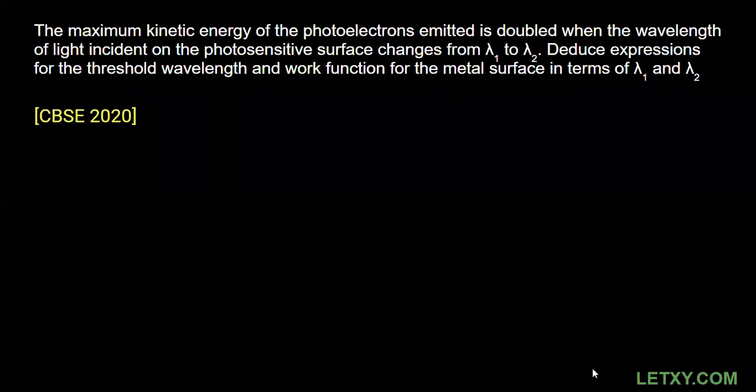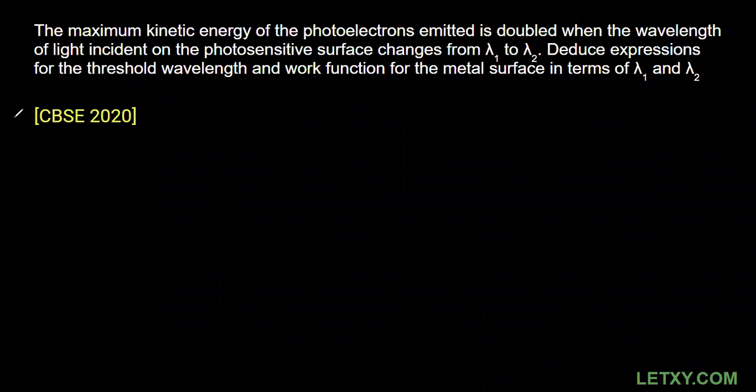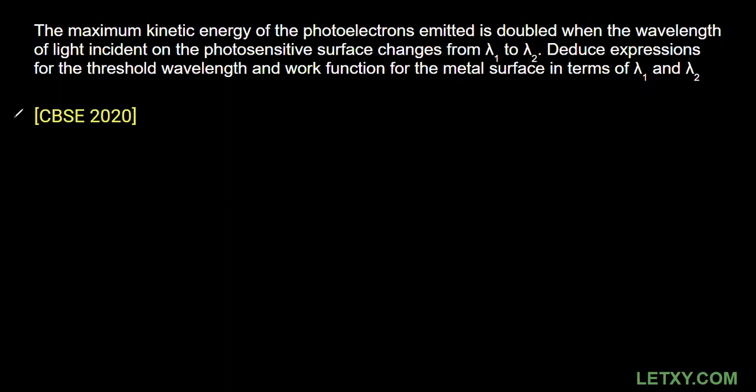So there is a question right now, let's read it out. The maximum kinetic energy of photoelectrons emitted is doubled when the wavelength of light incident on the photosensitive surface changes from lambda 1 to lambda 2. Deduce an expression for the threshold wavelength and work function for the metal surface in terms of lambda 1 and lambda 2. This question is from chapter 11, Dual Nature of Radiation.